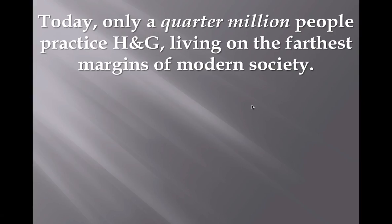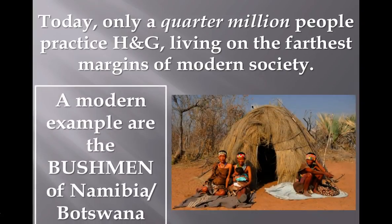Do you think these hunters and gatherers were ancient history? Well, we do still have people in the world who hunt and gather today — they don't use modern agriculture practices. These are usually people in isolated parts of the world, furthest from society, furthest from agriculture farms and ranching. One perfect example our textbook mentions is the Bushmen from Namibia and Botswana, who still practice traditional hunting and gathering to this day.